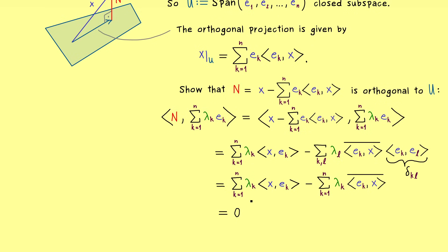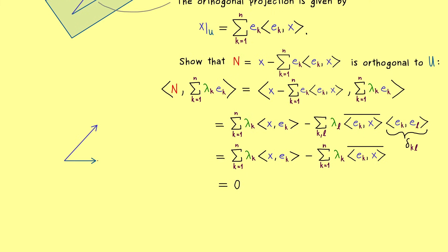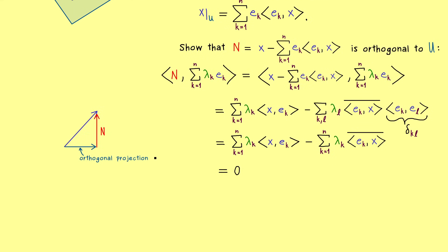So this is the first thing to remember: for a finite ONS the orthogonal projection of a vector x looks like this sum. Looking at the picture from the side, the length of the orthogonal projection is smaller than or equal to the length of the original vector x. Combining this fact with the projection formula gives us Bessel's inequality.